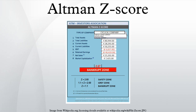Altman found that the ratio profile for the bankrupt group fell at -0.25 on average, and for the non-bankrupt group at +4.48 on average.